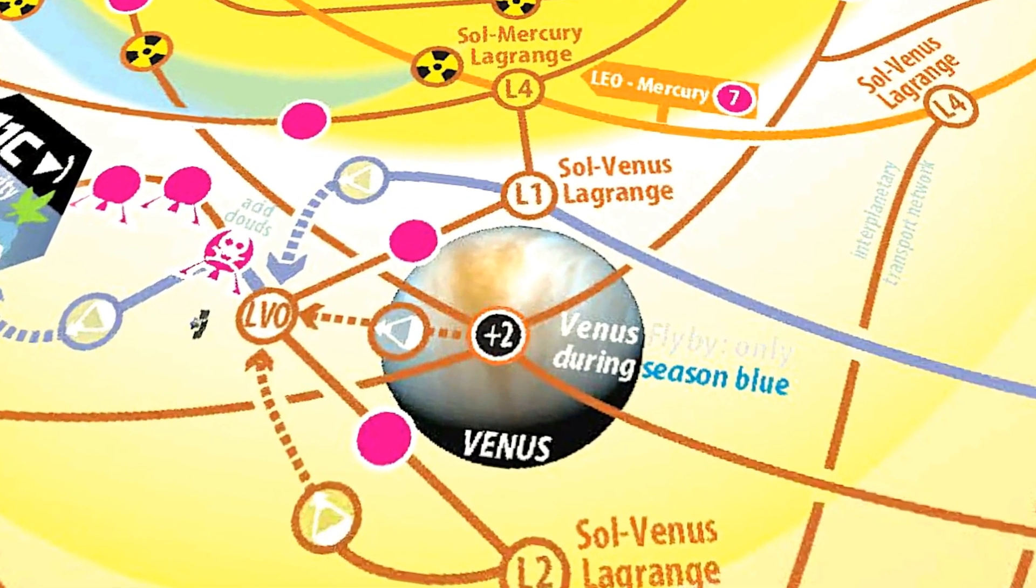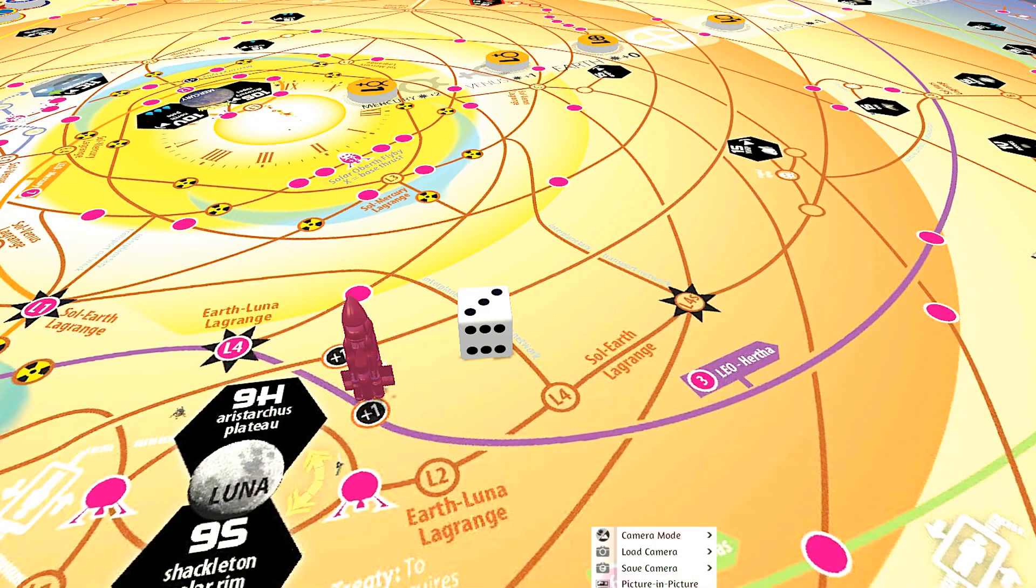Now you do need to check for a glitch whenever you use the bonus thrust provided by a flyby. A glitch roll means you have to decommission any co-located cards with a matching rad-hardness to the roll. I roll a three, which means my robonaut is decommissioned.